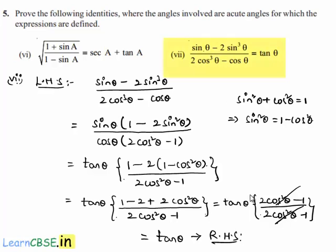So, here LHS is equal to RHS, and we can confirm that (sin θ - 2sin³θ) / (2cos³θ - cos θ) = tan θ.